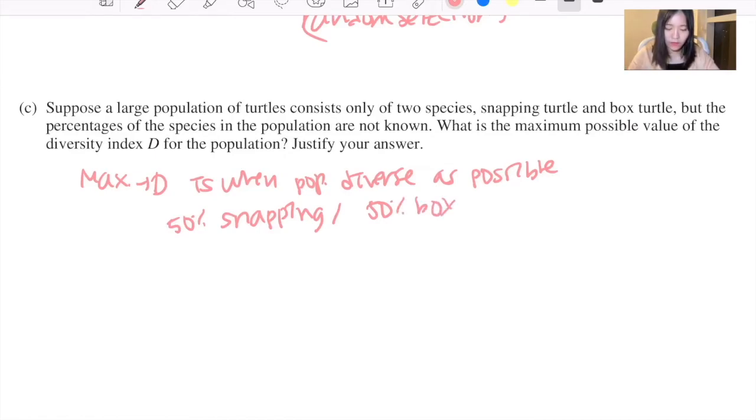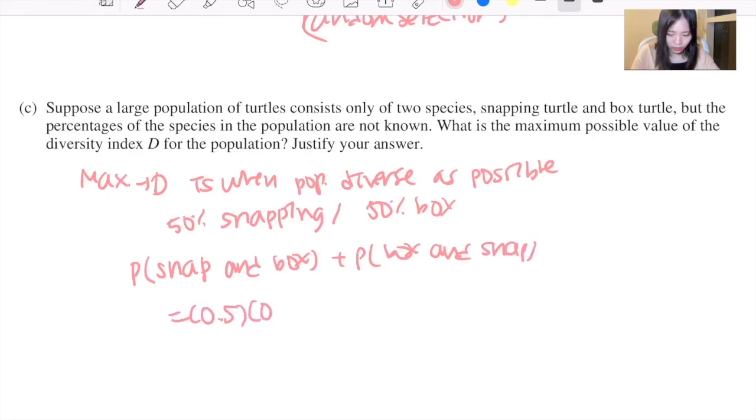So in this situation, the diversity index would be the probability that two randomly chosen turtles are from different species. So it is P(snap and box) plus P(box and snap), which would be 0.5 times 0.5 plus 0.5 times 0.5, so 0.25 plus 0.25 equals 0.5.